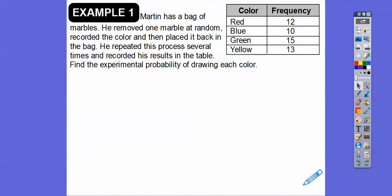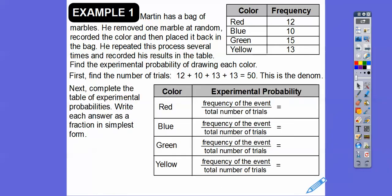Here's an example. Martin has a bag of marbles. He removed one marble at random, recorded the color, and then put the marble back in the bag. Now that's important - you always have to put it back in the bag to keep it an independent event, and you'll hear more about that in the next lesson. He repeats that process several times and records his results in the table. Find the experimental probability of each color. First we've got to add up all those numbers to find our denominator. So we get 50, so that's our denominator when we add those up.